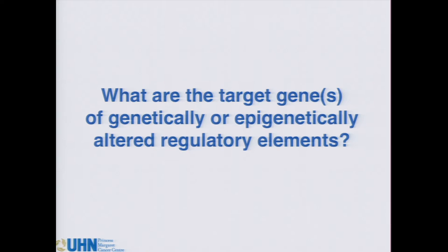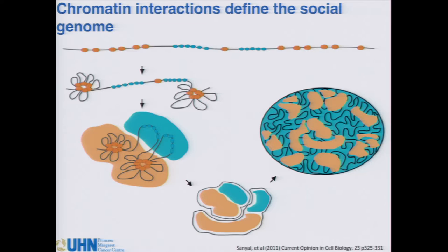The key question we're always asking is: given a risk locus that maps to an enhancer, what is the target gene? The chromatin organization or 3D architecture of the genome is very complex. Topological associated domains — TADs — define regions of active or repressed chromatin that can be far apart. Within active TADs, specific interactions allow promoters to interact with their enhancers of interest and regulate gene expression. It's important to be able to discriminate these types of interactions effectively.